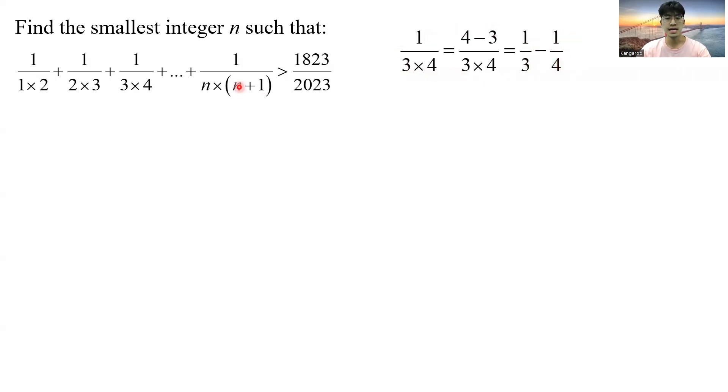And applying this on the left-hand side, the left-hand side will simply become 1 over 1 minus 1 over 2 plus 1 over 2 plus 1 over 3 plus 1 over 3, and it goes on. And you can notice that all the middle terms cancel each other, and we are only left with 1 minus 1 over n plus 1.